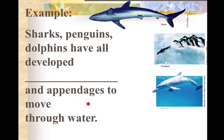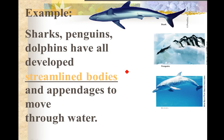To show streamlined body shapes — these are all different species: a fish, a bird, and a mammal — and they all have a streamlined body because they live in the same type of environment. Streamlined bodies are a classic example of convergent evolution.